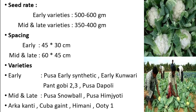It has been seen that cultivation of cauliflower was introduced by Dr. Jameson to India. Now let us see the important varieties. Early varieties are Pusa Early Synthetic, Early Kunwari, Pusa Dapoli, and Pusa Gobi 2-13.